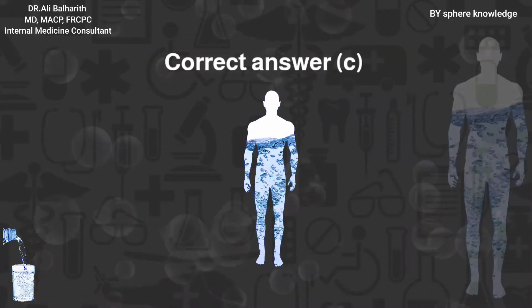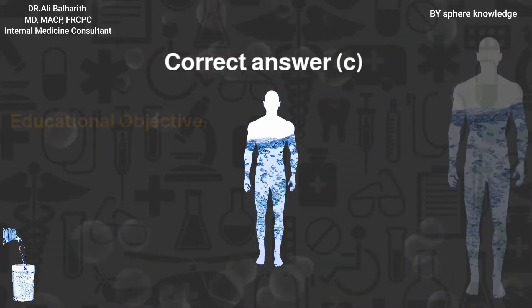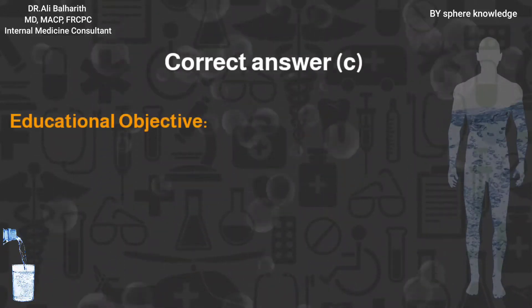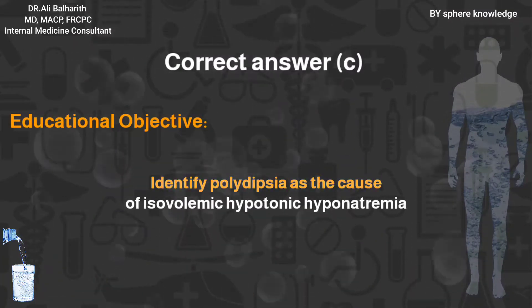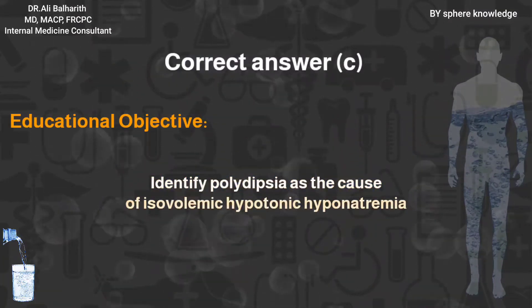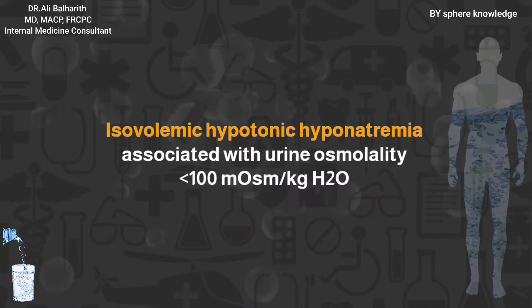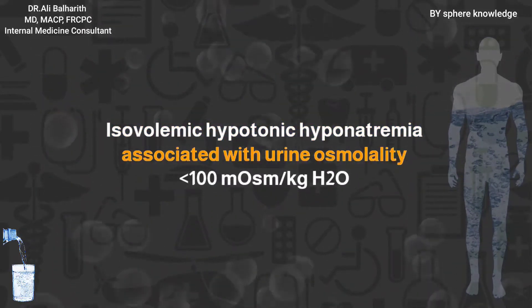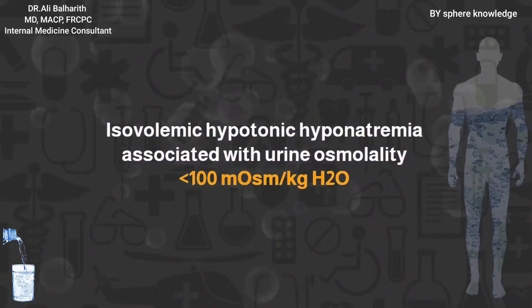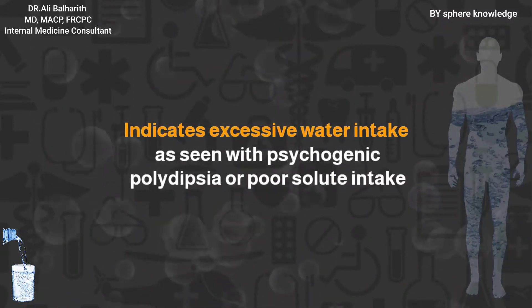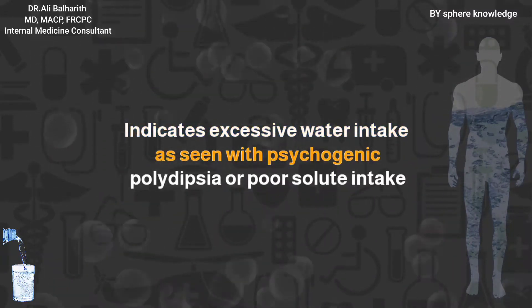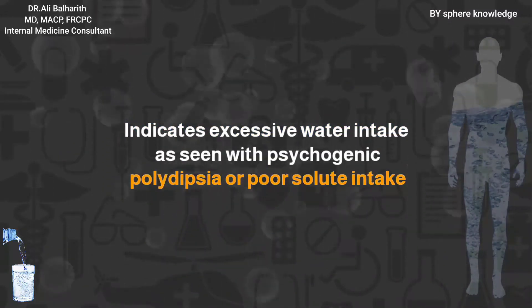Correct answer C. Educational objective: identify polydipsia as a cause of isovolemic hypotonic hyponatremia. Isovolemic hypotonic hyponatremia associated with urine osmolarity less than 100 indicates excessive water intake, as seen with psychogenic polydipsia or poor solute intake.